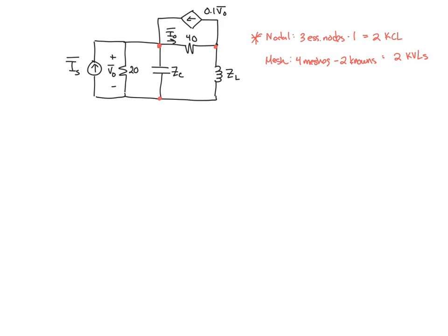So our first objective with nodal analysis is to identify the essential nodes already done for us. We've got, we'll call them node A, B, and C. We need to choose one of these to be our ground node. We don't have any voltage sources, so the best choice is probably going to be the one with the most number of elements attached to it. We've got one, two, three, four elements attached to C, three elements attached to B, one, two, three, four, five elements attached to A. So let's choose A to be our ground.